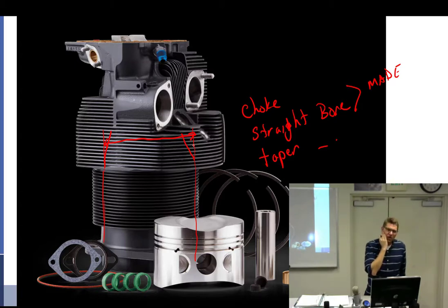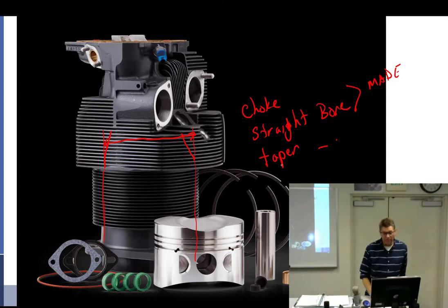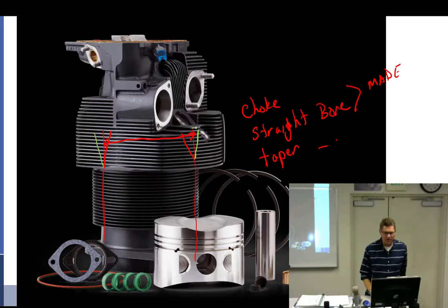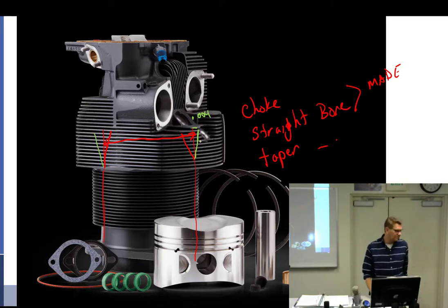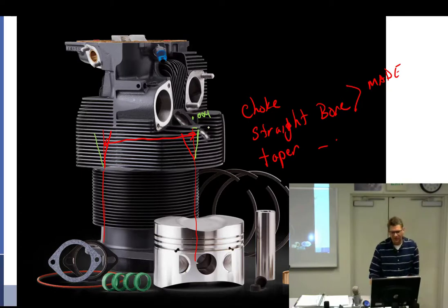Almost all cylinders now come as choke bore. The only straight bore ones are some very low horsepower engines. For a time, all nitrided cylinders were choke bore while plain steel cylinders were straight bore. If you measure taper — where the cylinder is wider at the top than the bottom — that indicates wear. If it went from straight bore to four thousandths taper it wore four thousandths; if it went from choke bore to taper it wore about eight thousandths.